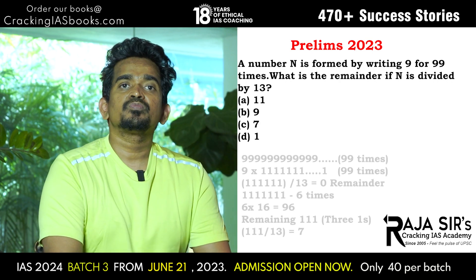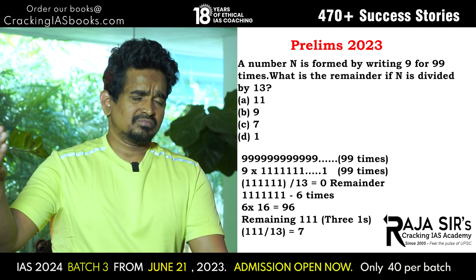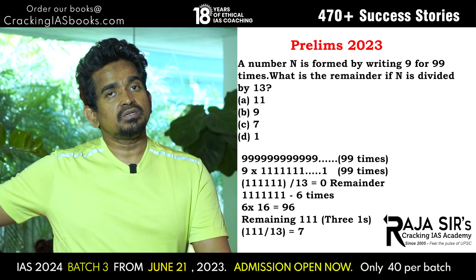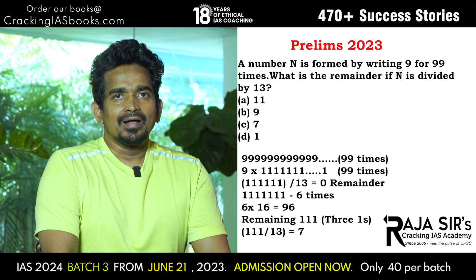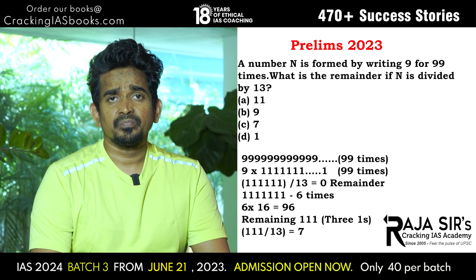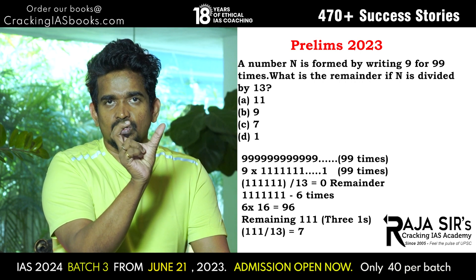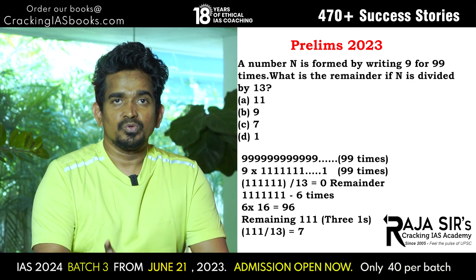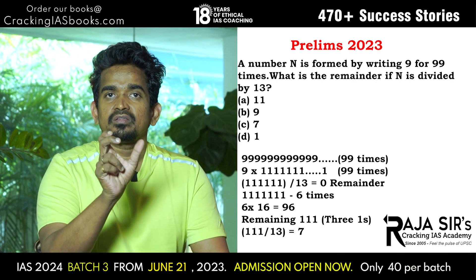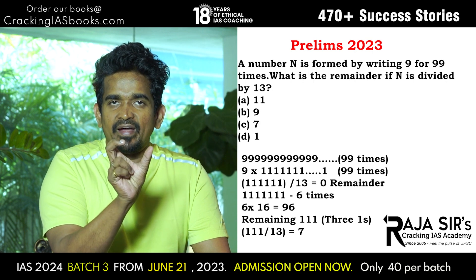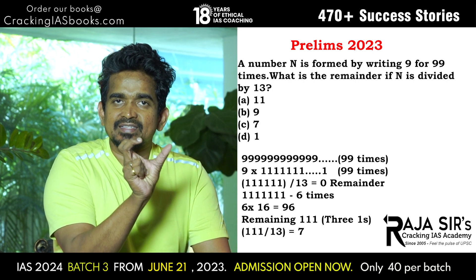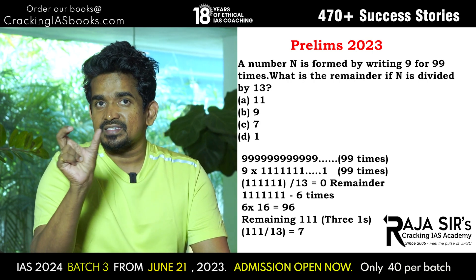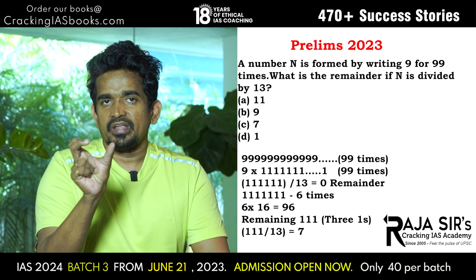Writing 9 ninety-nine times — that is 9, 9, 9, 9 up to 99 times. I am going to split this into two parts: 9 multiplied by 111...1 up to 99 times. Now, for divisibility by 13, you take 1, then 11, then 111 — 11 divided by 13 is not divisible. Then 111, 1111, and so on. You will find a pattern: every 6 set of 1s is divisible by 13 without any remainder.